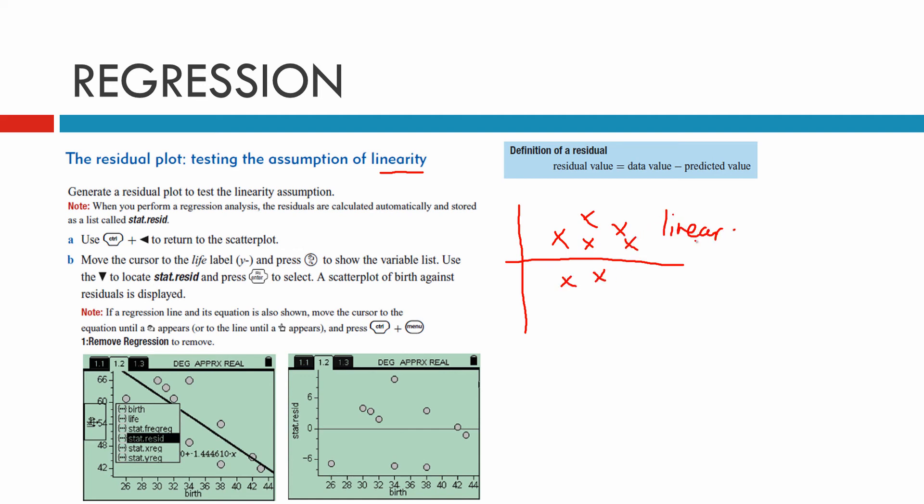But if we get something that has a pattern in it, for example what we're drawing up right now, and you can trace a line around these dots and you'll get an inverted parabola, then this pattern shows that it is not linear. Be aware of that, we have to get no clear pattern. And here is another one that is non-linear because we can see a pattern there. Don't actually draw up the line, but you can if you want to, but you see that it's not linear.